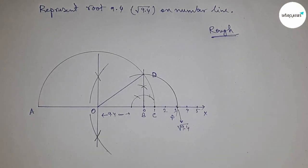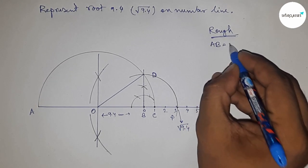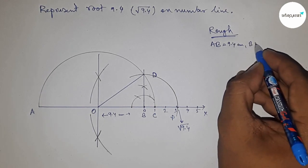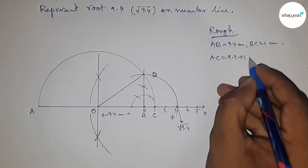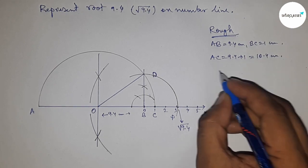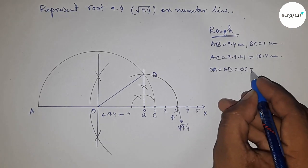Now let's discuss the calculation. AB equals 9.4 centimeters, BC equals 1 centimeter, so AC equals 9.4 plus 1 equals 10.4 centimeters. The radius OA equals OD equals OC equals 10.4 divided by 2, which is 5.2 centimeters.